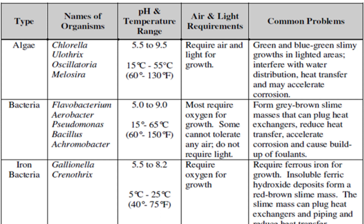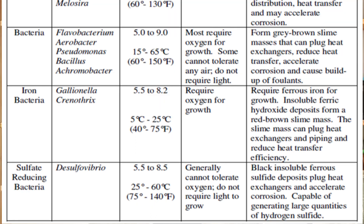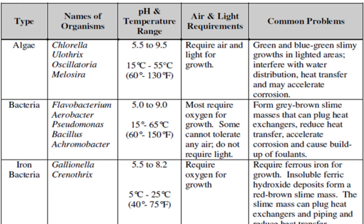Bacteria can contribute a lot of problems in our cooling water system. If these bacteria are not controlled properly, we may face a lot of problems. However, the good news is that different types of bacteria survive under different conditions. Bacterial growth is very low at low temperatures and at extremely high temperatures. Similarly, all types of bacterial growth are very low at extreme high pH and at extreme low pH.